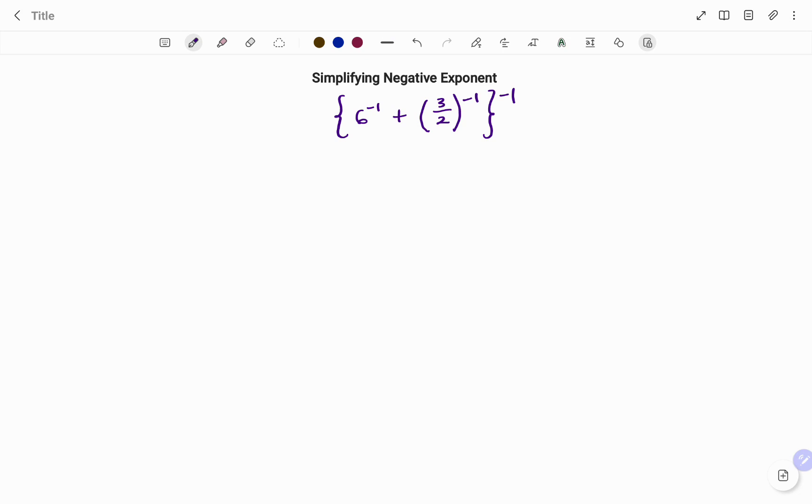In this example, we have 6 to the power of negative 1 plus the quantity 3 divided by 2 to the power of negative 1, and then the entire expression is raised to the power of negative 1.